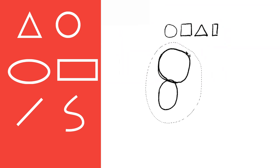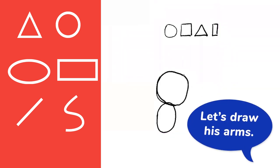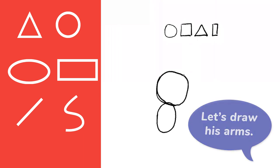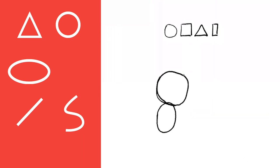All right, what's the next shape we should draw for a bunny? Okay, and what kind of shape should we use for his arms? That's good. Okay, so we'll draw two rectangles.